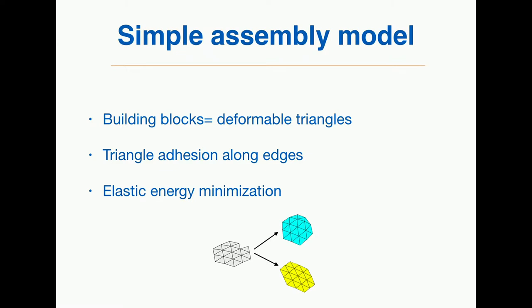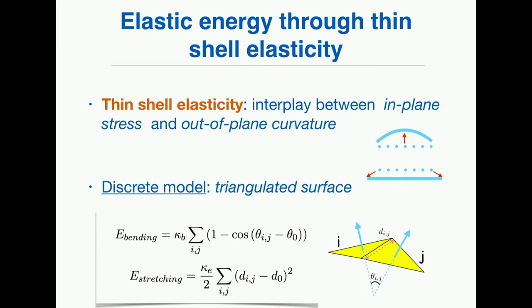This problem has been already approached by numerical simulations, in particular in the group of Roya Zandi. The simplest way to address questions of shape is to have a minimal model where the building blocks are deformable triangles that want to share some edges — to have some adhesion. You must be able to compute some elastic energy for your system. You try to see if the minimization of elastic energy reproduces the shapes you observe. I will try to provide analytical arguments to understand the shapes seen in such simulations.